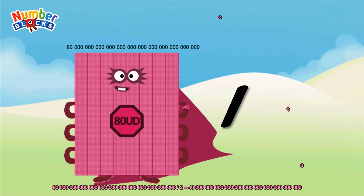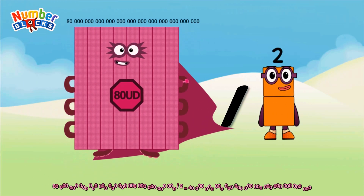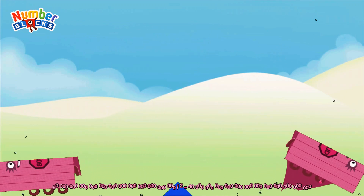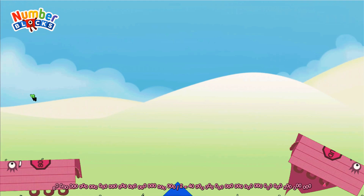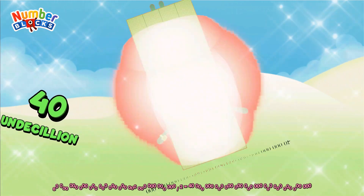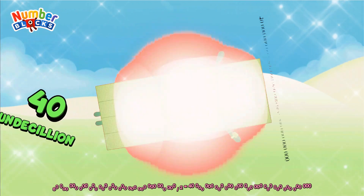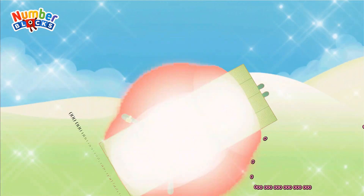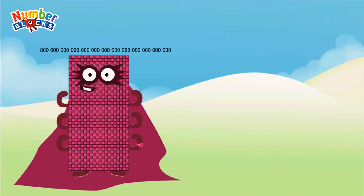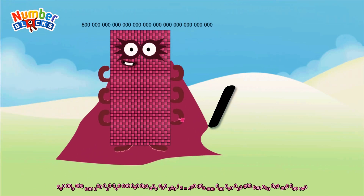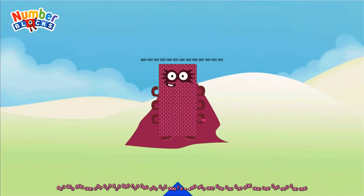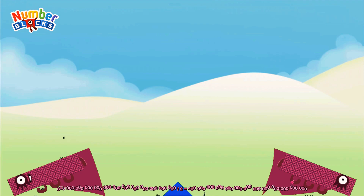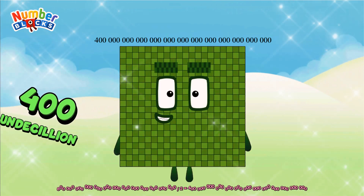Eight hundred decillion divided by two equals 40 decillion. Eight hundred decillion divided by two equals four hundred decillion.